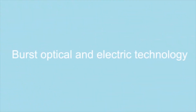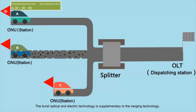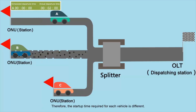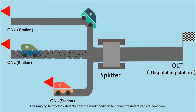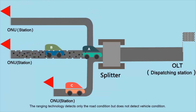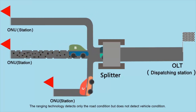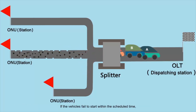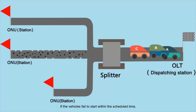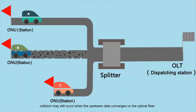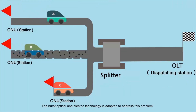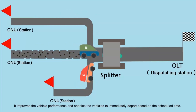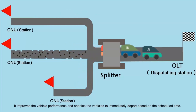Burst Optical and Electric Technology is supplementary to the Ranging Technology. The service lives of vehicles are different, so the startup time required for each vehicle is different. The Ranging Technology detects only the road condition but does not detect the vehicle condition. The departure time determined with the Ranging Technology does not incorporate the startup time of the vehicles. If the vehicles fail to start within the scheduled time, collision may still occur when the upstream data converges on the optical fiber.